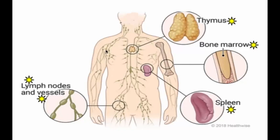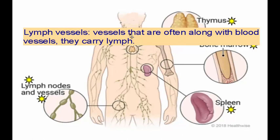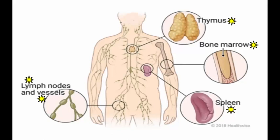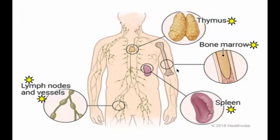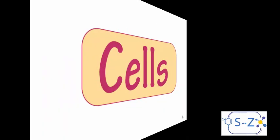The lymph nodes act like little stacks where immune cells are stored, so if anything enters the body, the immune cells will be quick to defend it. The lymph vessels are located all around the body, running parallel to the blood vessels, and they carry lymph. Lymph is a liquid made mainly of water, salt, and some fats; it circulates between the lymph nodes and immune organs, carrying immune cells and other substances.